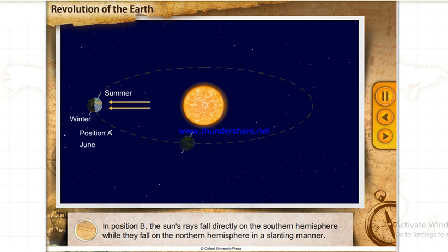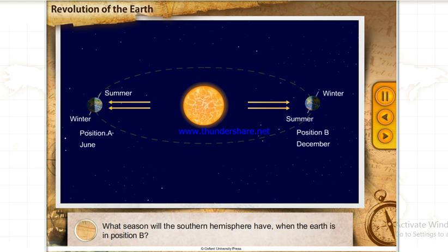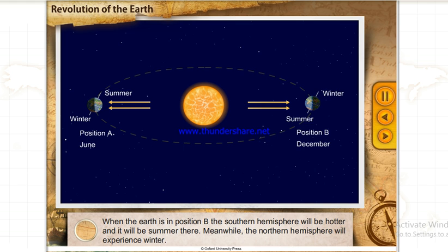In position B, the Sun's rays fall directly on the southern hemisphere while they fall on the northern hemisphere in a slanting manner. What season will the southern hemisphere have in position B? When the Earth is in position B, the southern hemisphere will be hotter and it will be summer there. Meanwhile, the northern hemisphere will experience winter.